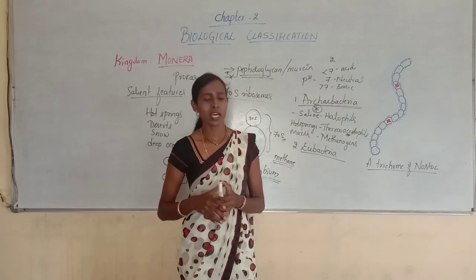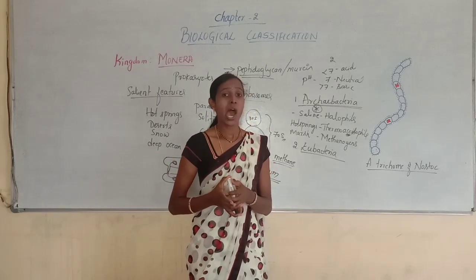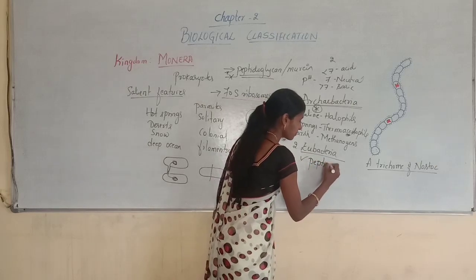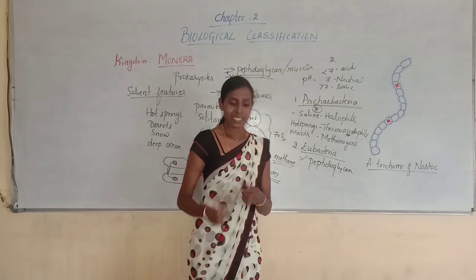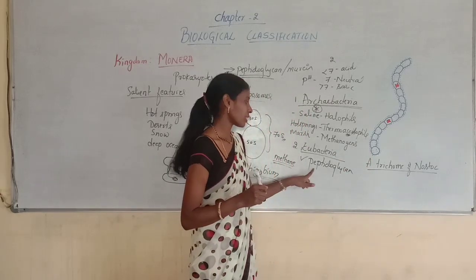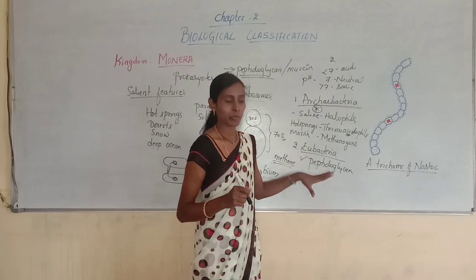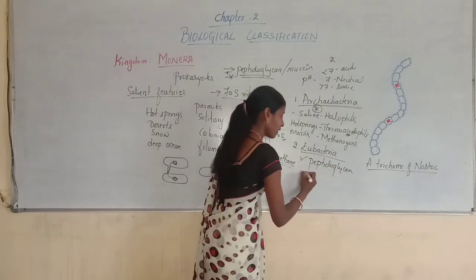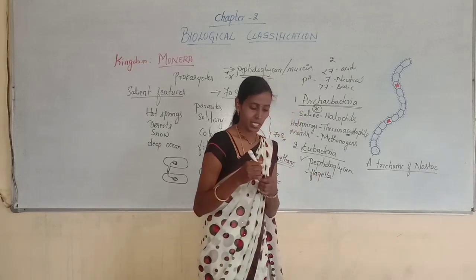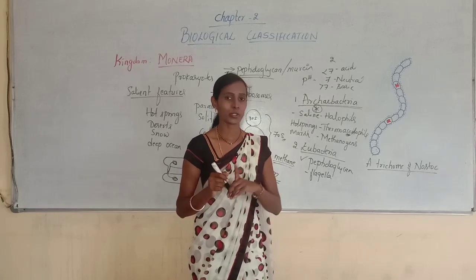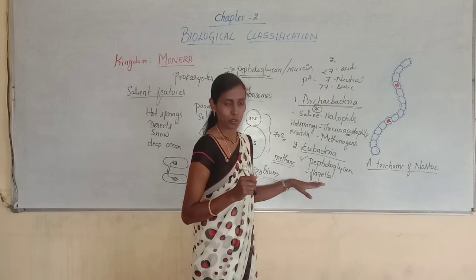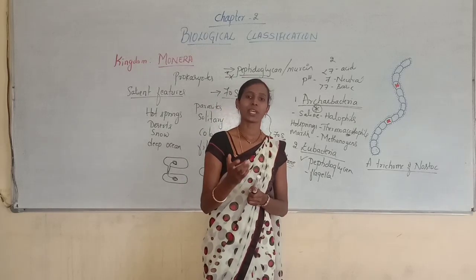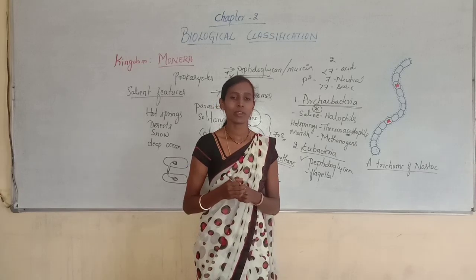Eubacteria are unicellular, microscopic, prokaryotic organisms characterized by the presence of peptidoglycans in their cell wall. If they are motile, they contain flagella which help them move. The organisms in Eubacteria may be autotrophic — able to synthesize their own food — or heterotrophic, meaning dependent on other organisms.